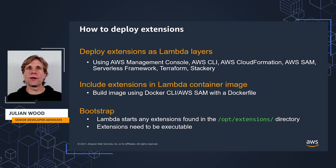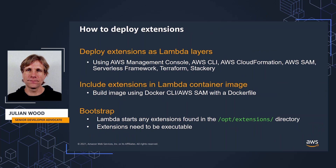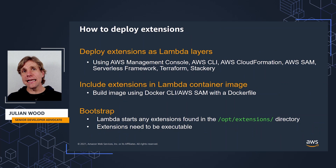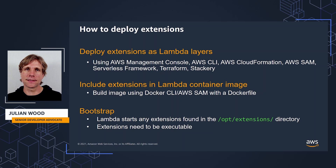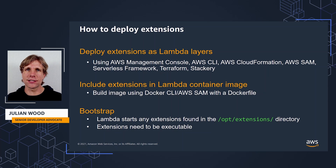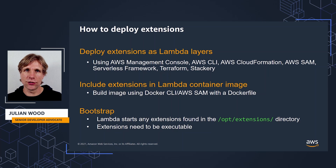You deploy extensions for zip archive functions using your existing tools to add a Lambda layer, then add configuration via environment variables. For container image functions, you include the extension files within the Docker file, and you can also create shareable extension container images. When Lambda starts up the execution environment, it searches the /opt/extensions directory and starts any extensions found. The extensions need to be executable for this to work.